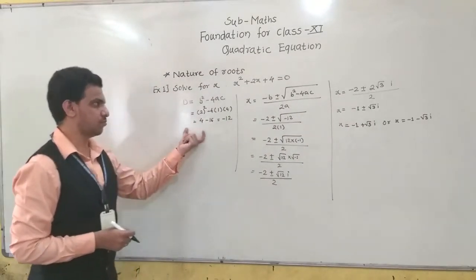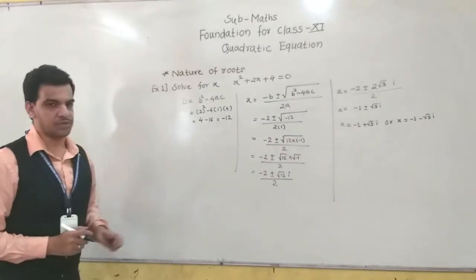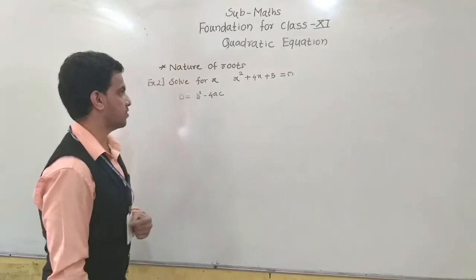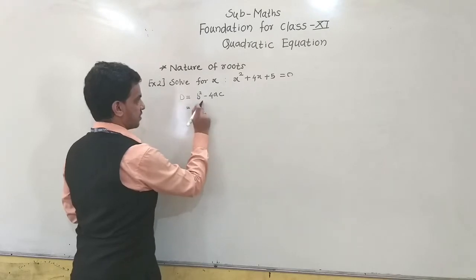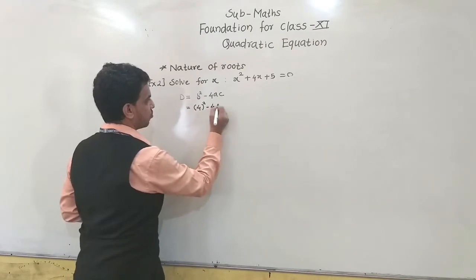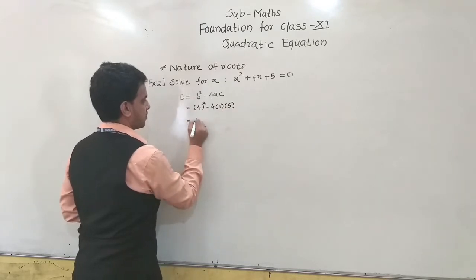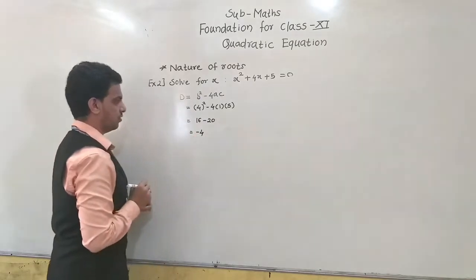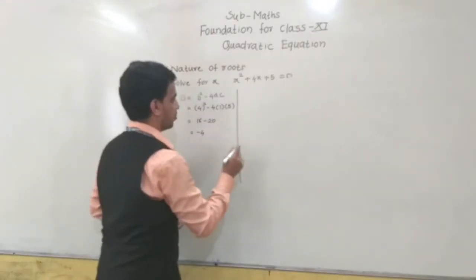Now we will take a second example: solve for x, x² + 4x + 5 = 0. First find D: D = b² − 4ac = 4² − 4(1)(5) = 16 − 20 = minus 4. Since D is minus 4, D less than 0, so roots are not real — they are imaginary roots.